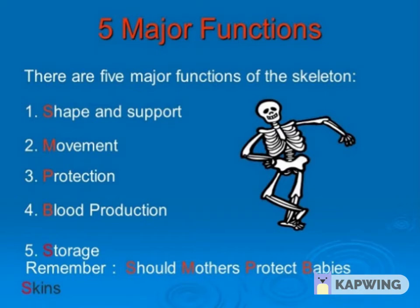First one is shape and support — it provides shape and support to our body. Next one is movement — it helps in different movements of our body. Next is protection — it protects our delicate organs. Next is blood production — it helps in blood production.